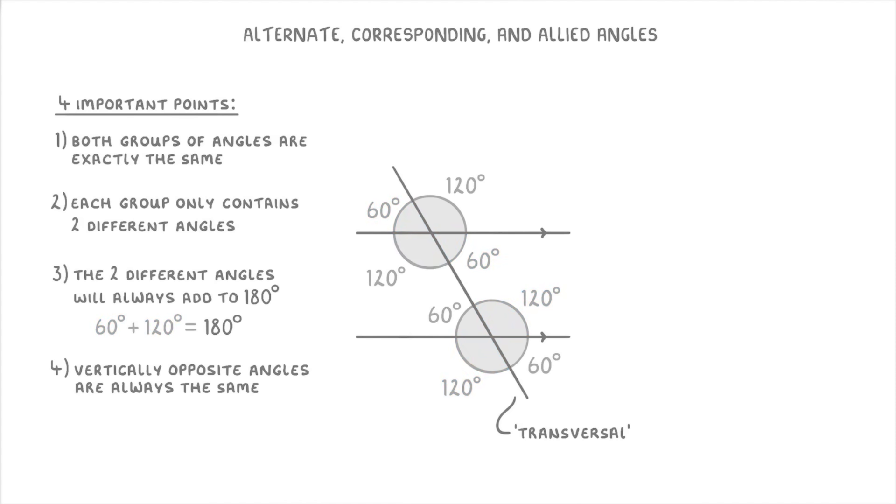Now, as long as you properly understand all of these rules, you can use this knowledge to work out unknown angles if one of them is missing. For example, if we had to find this angle here marked x, we'd be able to tell that it's 60 degrees, either because it's opposite this 60 degree angle and we know that vertically opposite angles are always equal, or because we know that it has to add to this 120 degrees to make 180.